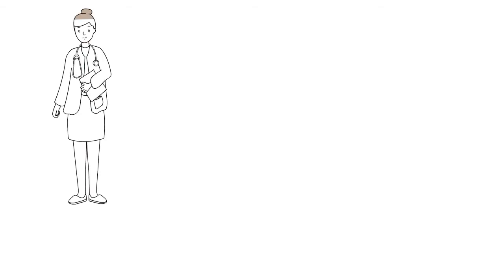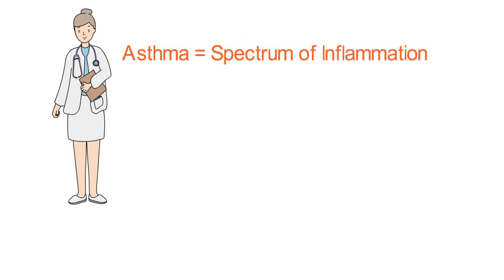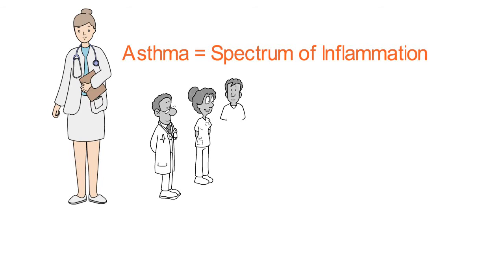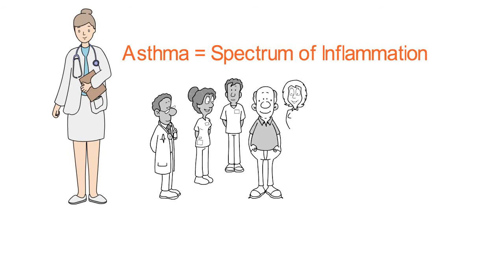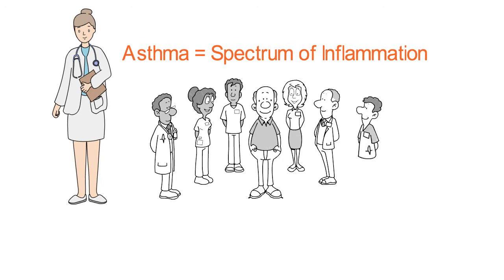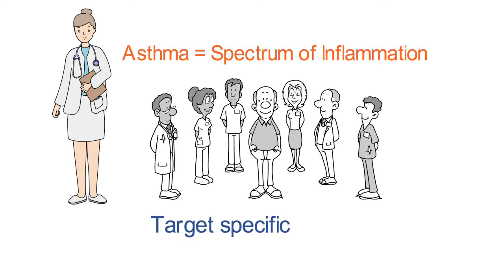We know that asthma is more than that — it's really a spectrum of inflammation. There's a lot of heterogeneity and lots of different kinds of asthma. Our charge, when we take care of these patients, is to sort that out as best we can in the clinical arena. The good news is we have some very nice tools available to us that can target specific pathways. The field has really advanced in an exciting way, and it's a great time to be involved in the care of patients with asthma.